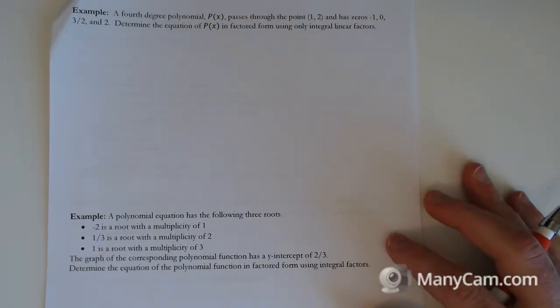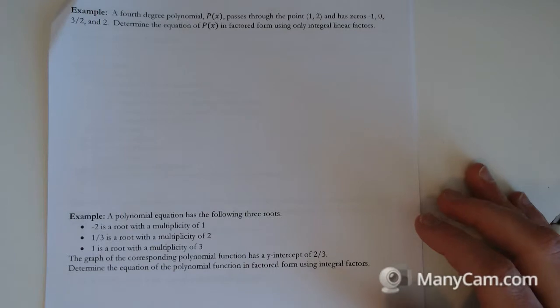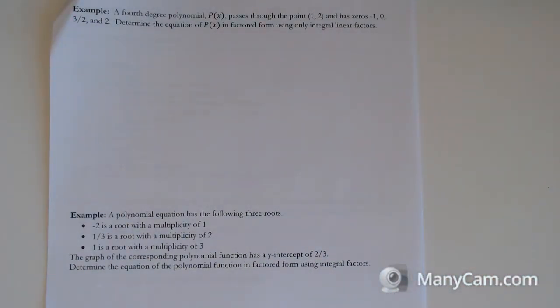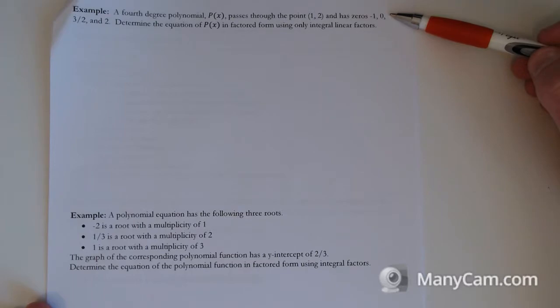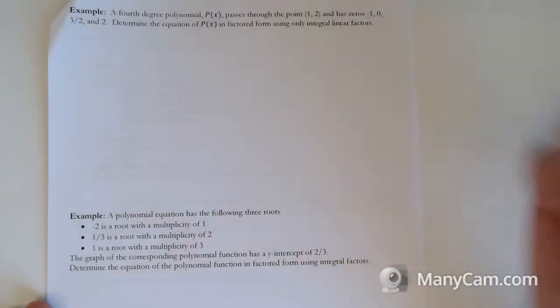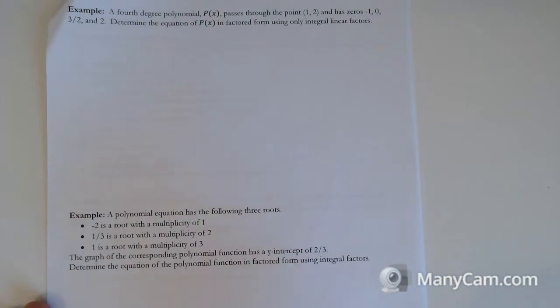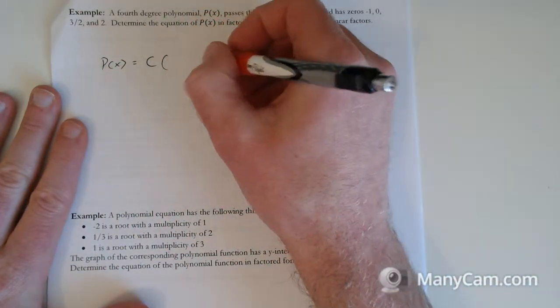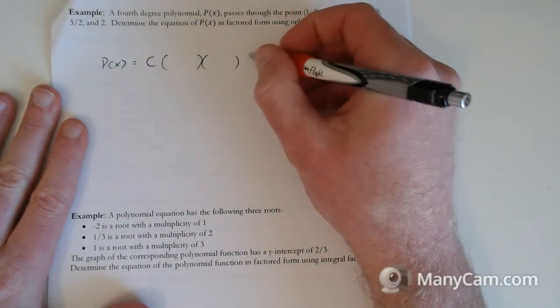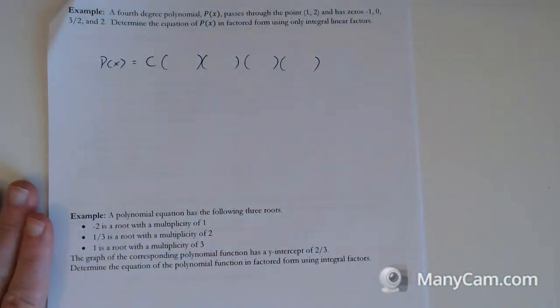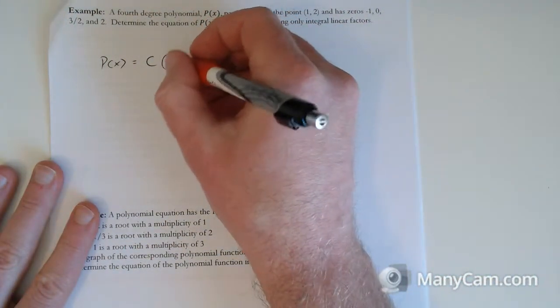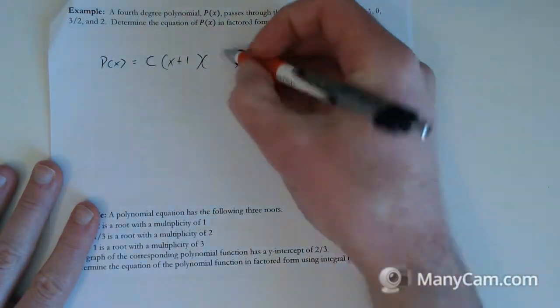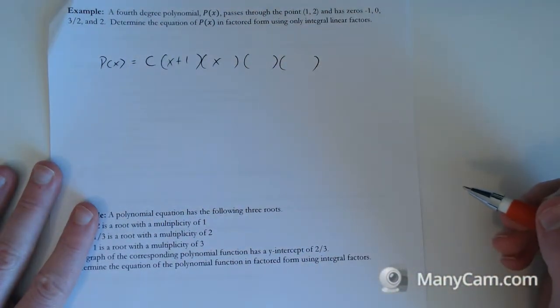I think I will do it. This is going like a fast video. So I'll just do both these examples. A fourth degree polynomial passes through the point and has zeros at... So just another different way of saying the exact same type of question. We have 1, 2, 3, 4 zeros. It's a fourth degree polynomial, so that's all of them.